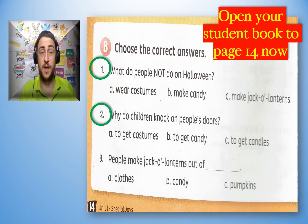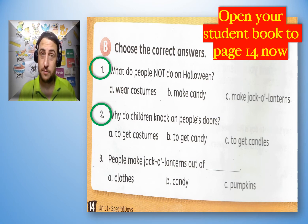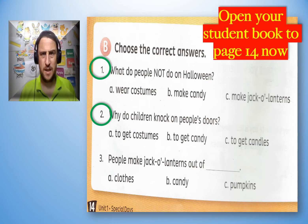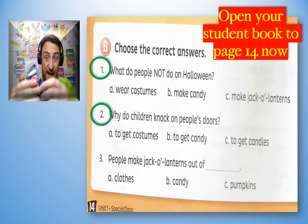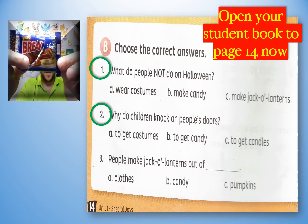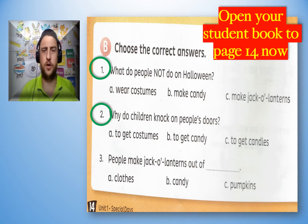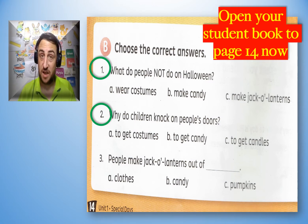Number two: Why do children knock on people's doors? Is it A: To get costumes? B: To get candy? Or C: To get candles? Why do children knock on people's doors? Circle A, B or C.